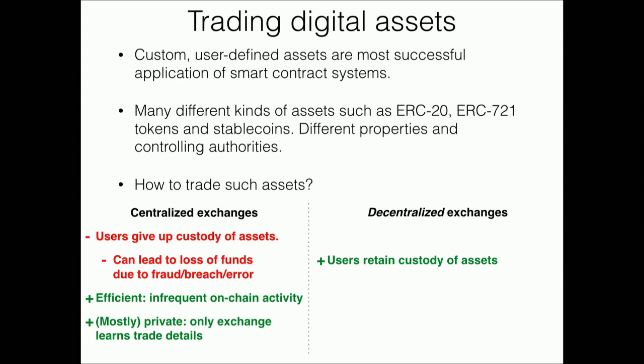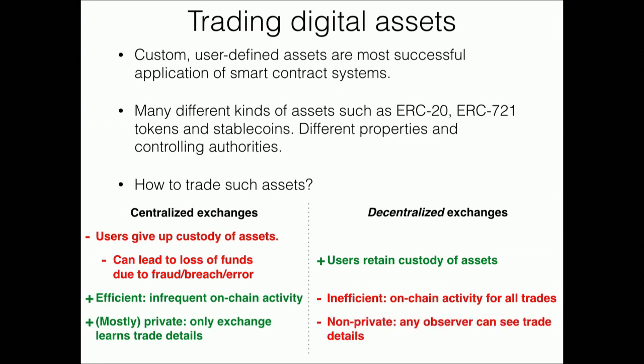In decentralized exchanges, users can retain custody of assets throughout the trading process and are responsible for their own funds without trusting a centralized exchange. But they have problems: every trade requires an on-chain transaction, which is quite inefficient. And this leads to a loss in privacy — without private transactions, any observer can see the details of every trade. I'll focus on privacy, since Eli already covered scalability techniques on Wednesday.